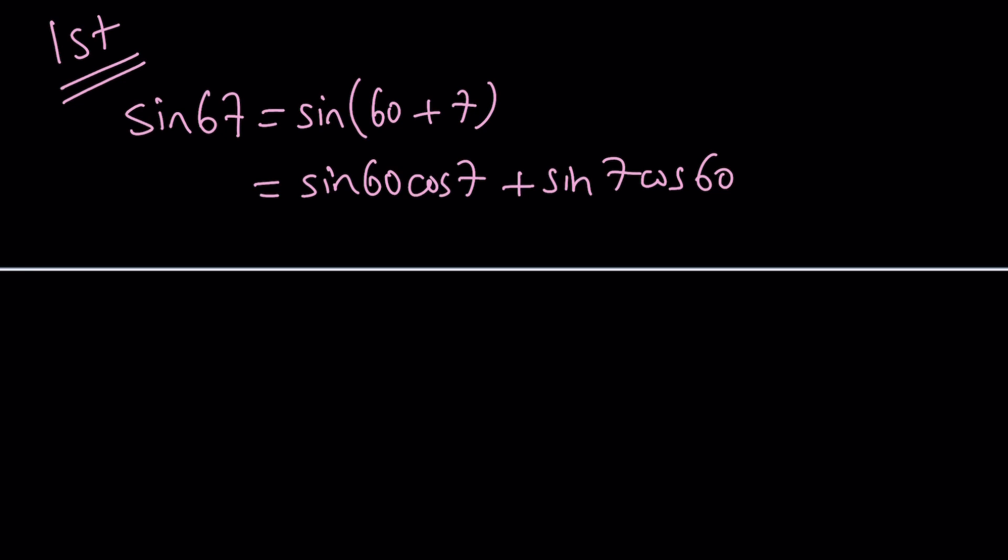In other words, they're mixed, sine and cosine. Sine 60 is the same as cosine 30, which is root 3 over 2. So we can write it as root 3 over 2 times cosine 7. And cosine of 60 is the same as sine 30, which is 1 half.